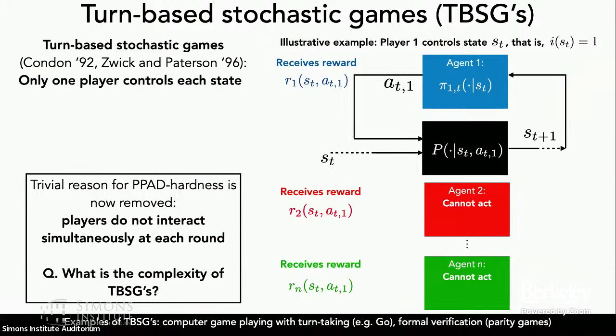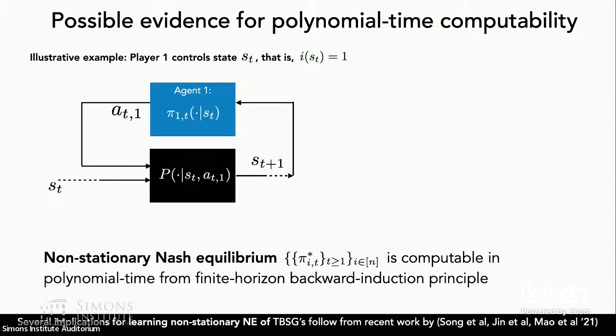This question turns out to be a pretty intriguing one to answer, because at the outset it seems like the answer could really go either way. Starting with some possible evidence for polynomial time computability, it actually turns out to not be very difficult to show that a non-stationary Nash equilibrium is in fact computable in polynomial time. This polynomial time computability has several interesting implications for learning such equilibrium concepts, following from some recent work.